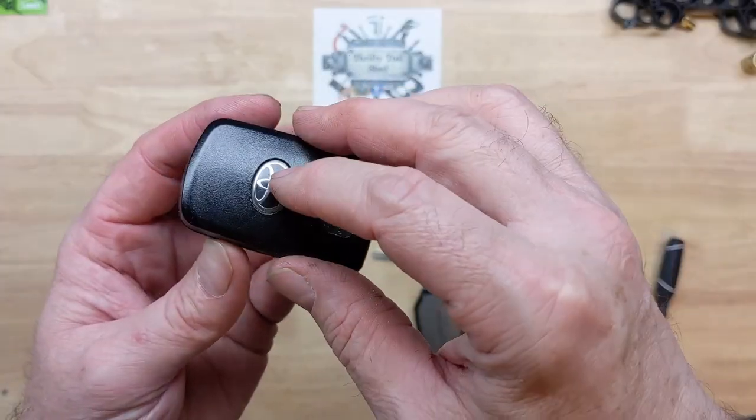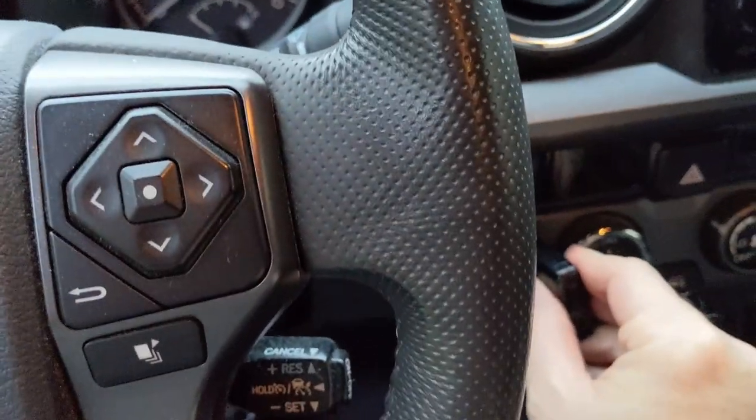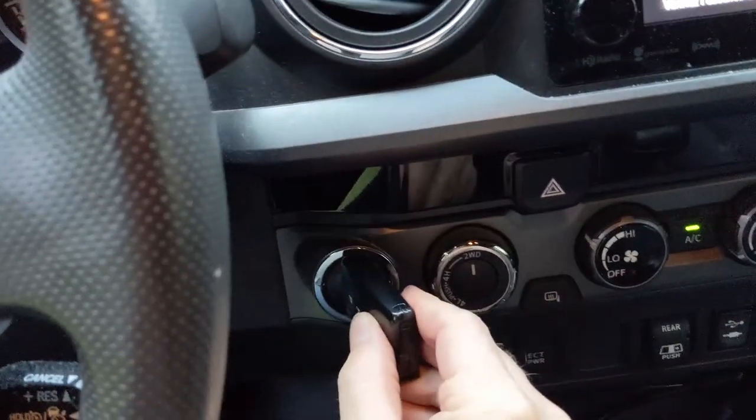So on a previous video, we took a look at this third generation Toyota Tacoma key fob, replacing the battery and how it would start the truck even without a battery in it.